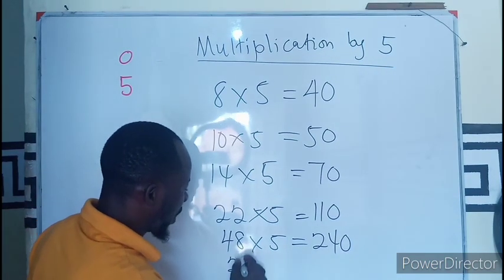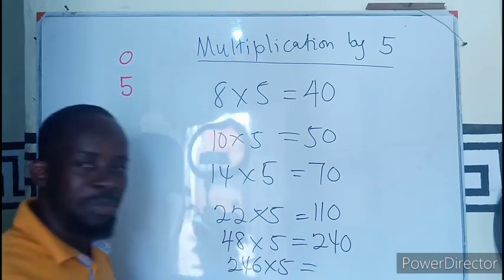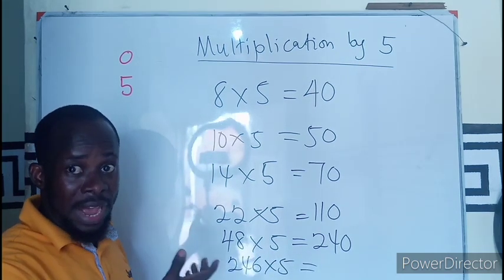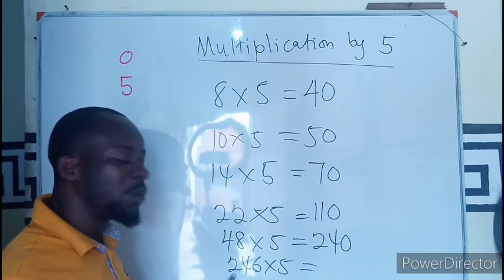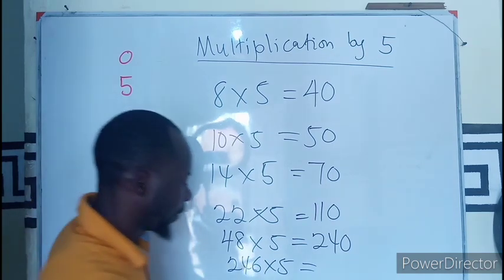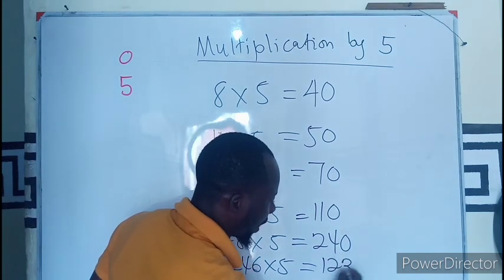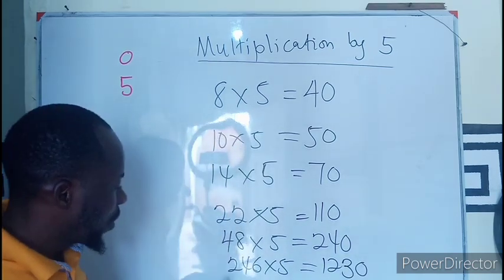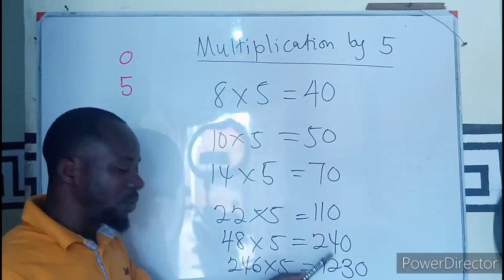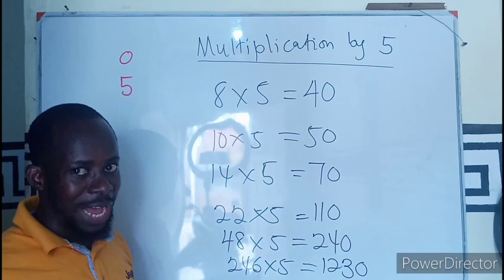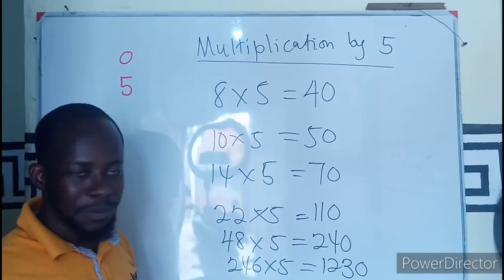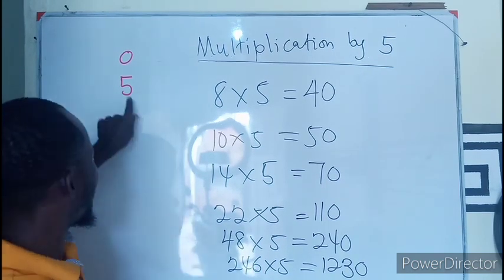So let's say you have 246×5. This is a big number. It will be difficult to find half of it, so half is going to be 123. Add your zero, meaning 246×5 will just be 1230—one thousand two hundred and thirty. Good, simple, right?